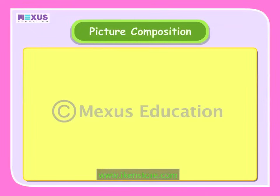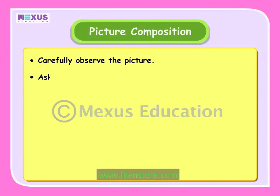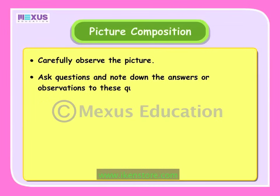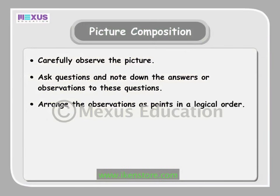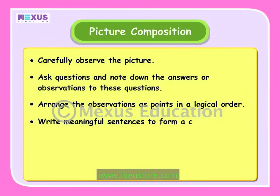Before we begin writing a composition, we need to carefully observe the picture. To make this easier, we can ask questions and note down the answers or observations to these questions. We need to arrange the observations as points in a logical order. These points will help us write meaningful sentences to form a composition.